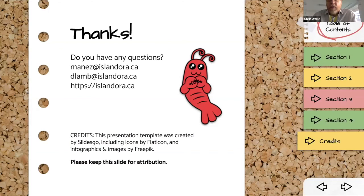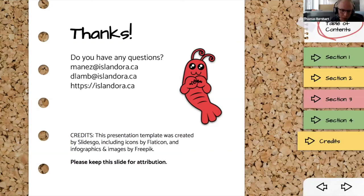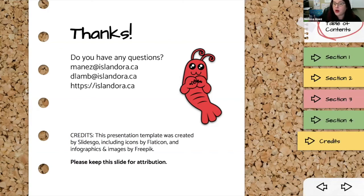Another question: does Islandora make any assumptions regarding the data model you use to describe your collection or documents? It's very flexible — we don't make a lot of assumptions going in. We ship with a default form designed to handle a semblance of MODS metadata to facilitate migrations from Islandora 7 into 8, but in terms of your data model that's really up to you. It's been designed to be as agnostic as possible, managed through Drupal forms and fields mapping into RDF in Fedora.